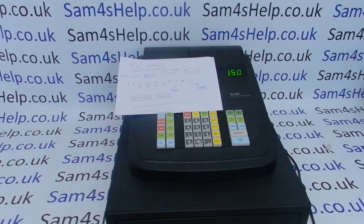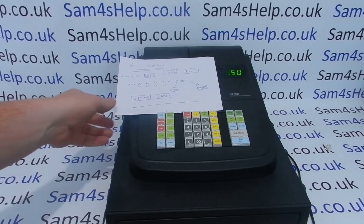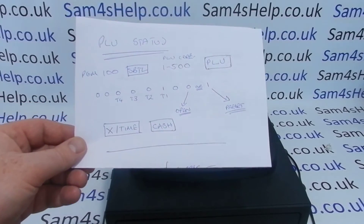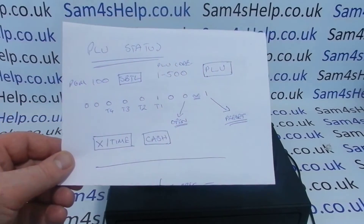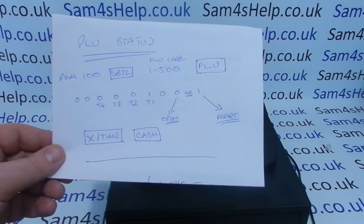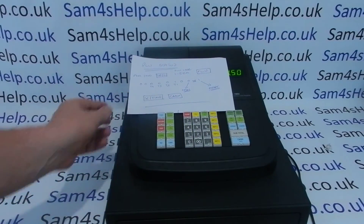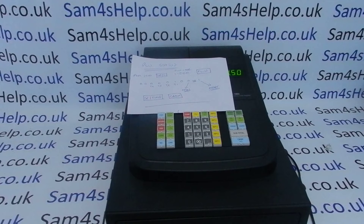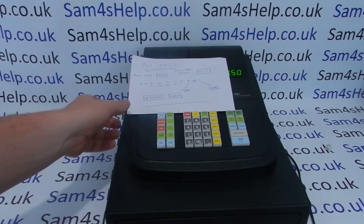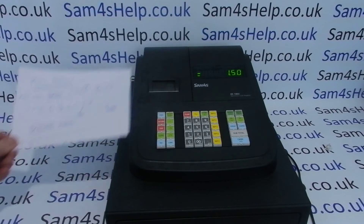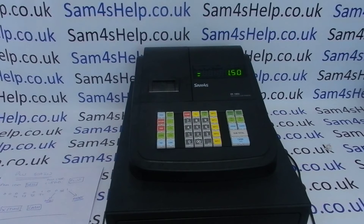I'll program a couple in slightly different ways, but the key thing is this code here. You basically type in an eight-digit code comprised of zeros and ones — the ones denote that you want a tax rate to apply and that you want the item to be preset. I'll go into it, and coupled with the manual it will hopefully make sense to you.